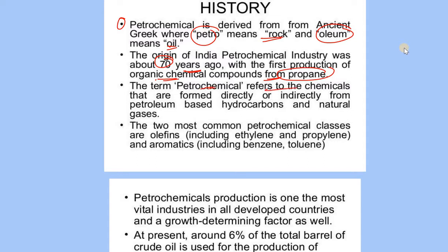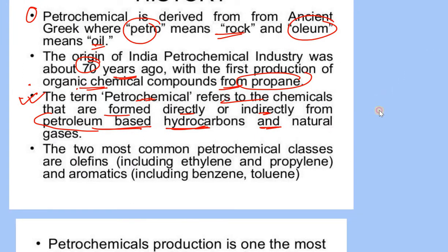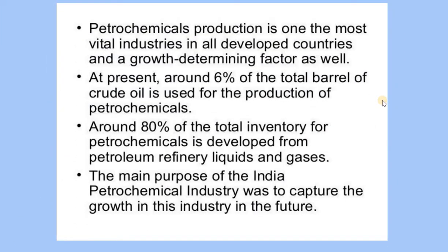The term petrochemical refers to the chemicals that are formed directly or indirectly from petroleum-based hydrocarbons. The petrochemical industry is the most vital industry in all developed countries and a growth-determining factor as well.